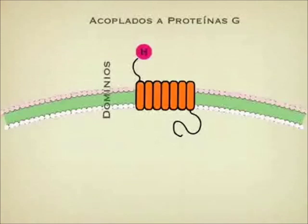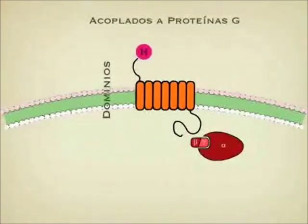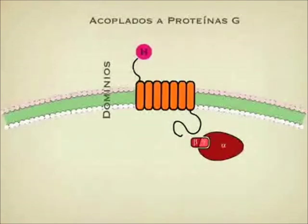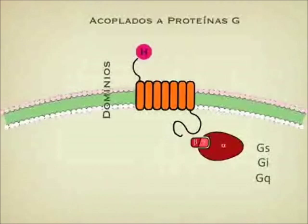In the internal part of this receptor there is a protein G with its parts alpha, beta, and gamma, which will be coupled to the intracellular part of our receptor. We know that these G proteins are not only one type — we have types like Gs, Gi, and Gq. At the end of our presentation we will explain what Gs, Gi, and Gq are.